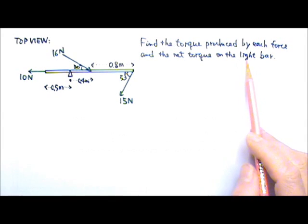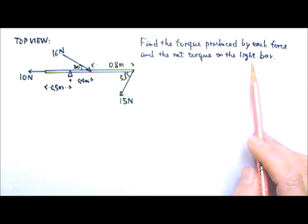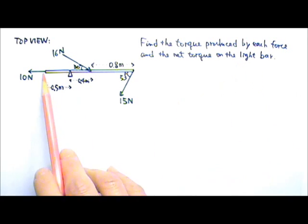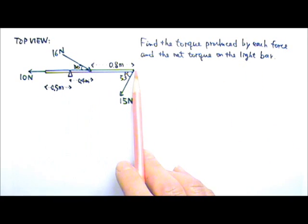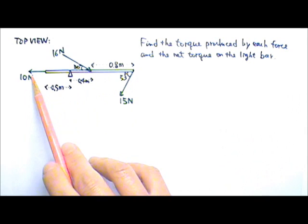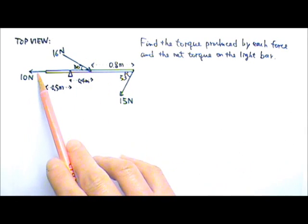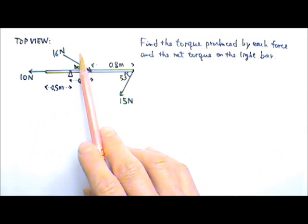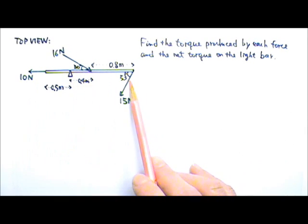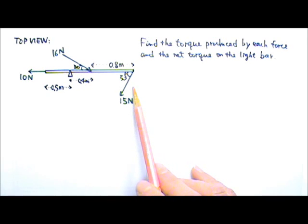"Light" means we can ignore the mass of the bar and treat the bar as massless. So we have only three forces acting on the bar: 10 newtons, 16 newtons, and 15 newtons. There is no mg to worry about.